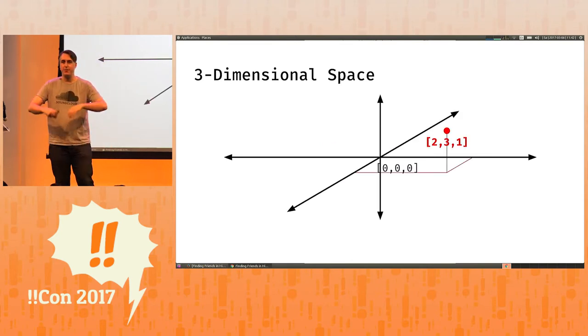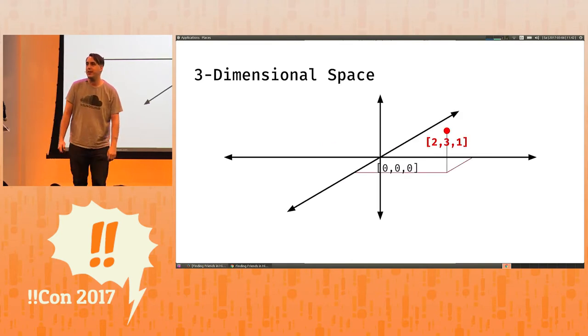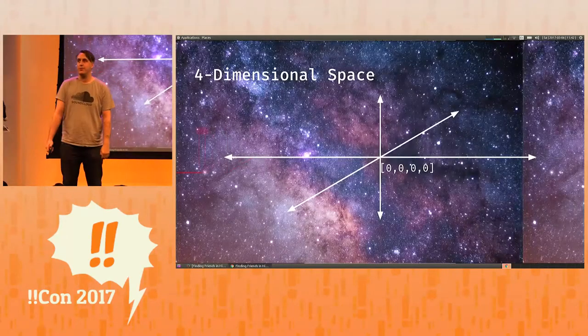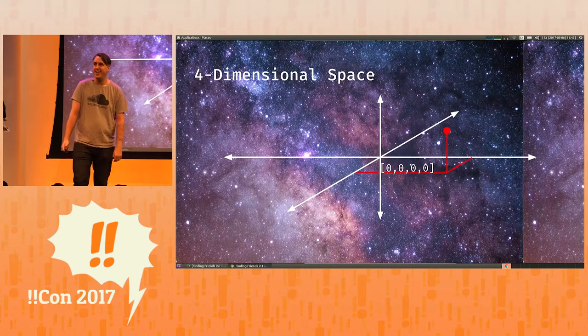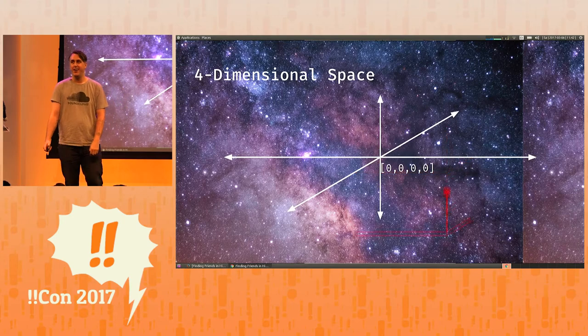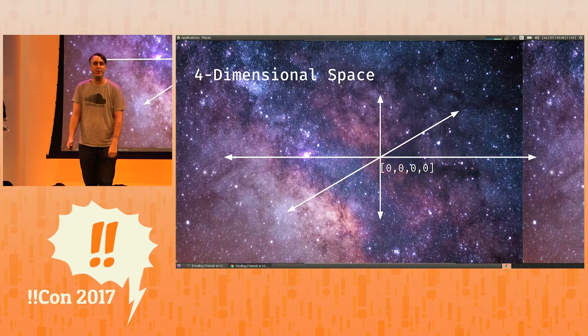Here is a vector in three-dimensional space, it's flexing my abilities to do drawings in Google Slides. It is a point in a cube, and here is a vector in fourth-dimensional space, where the fourth dimension is time.